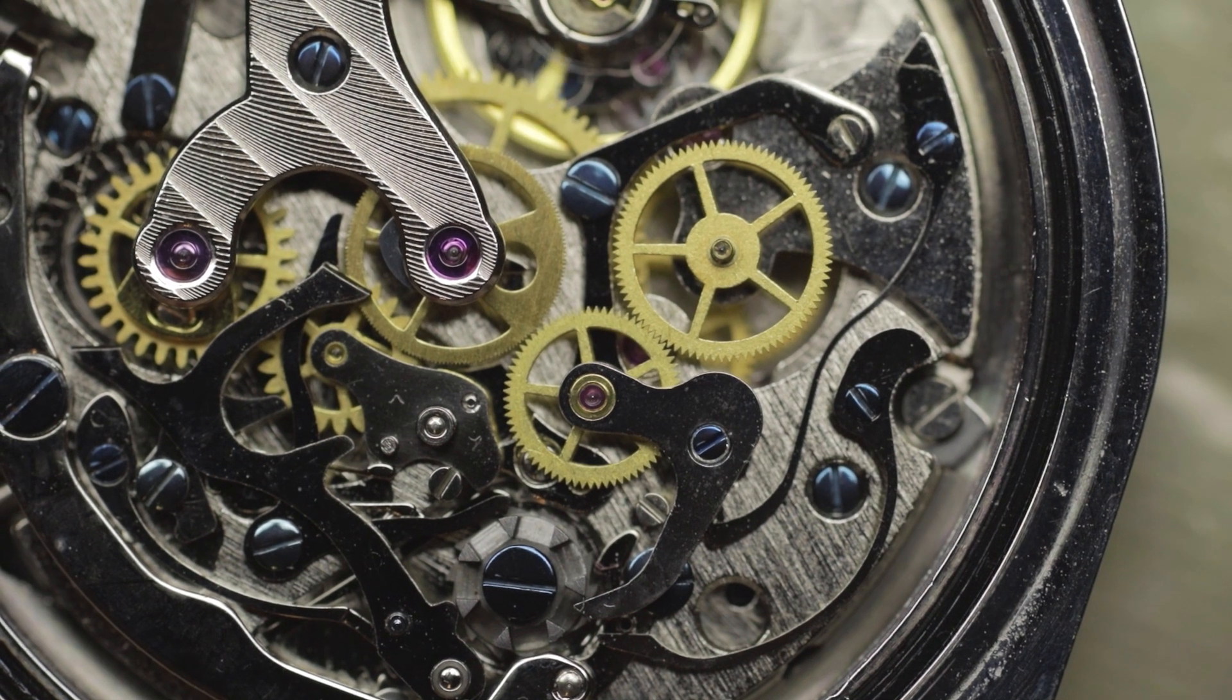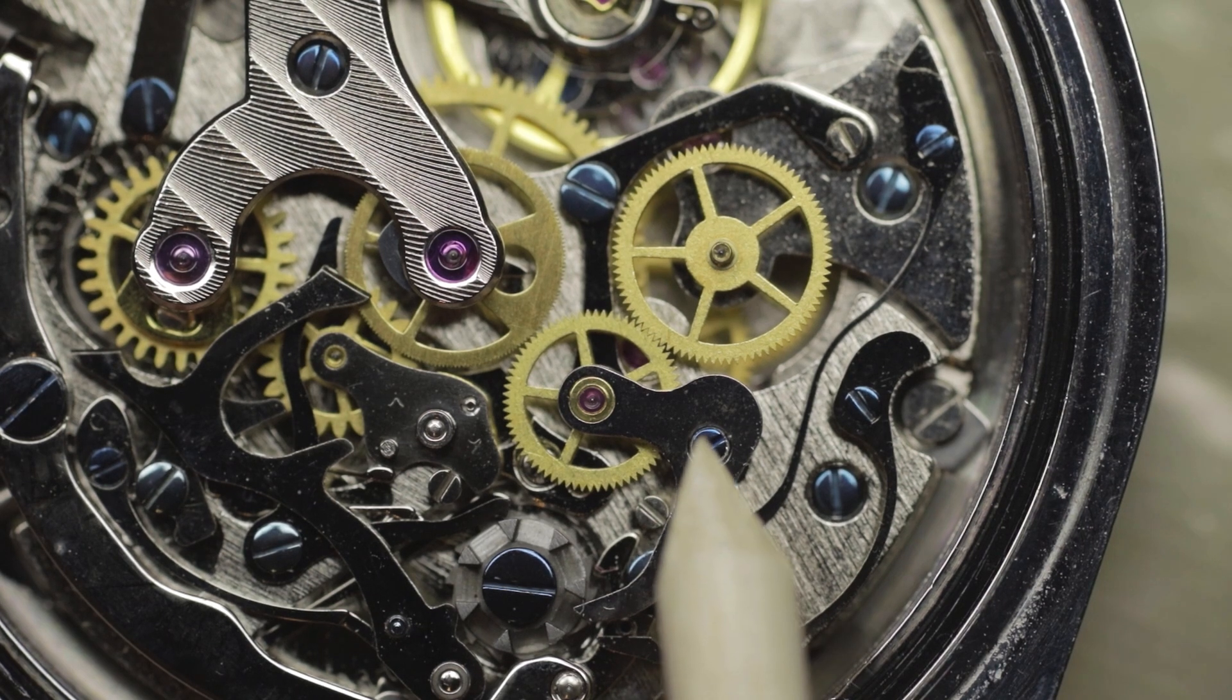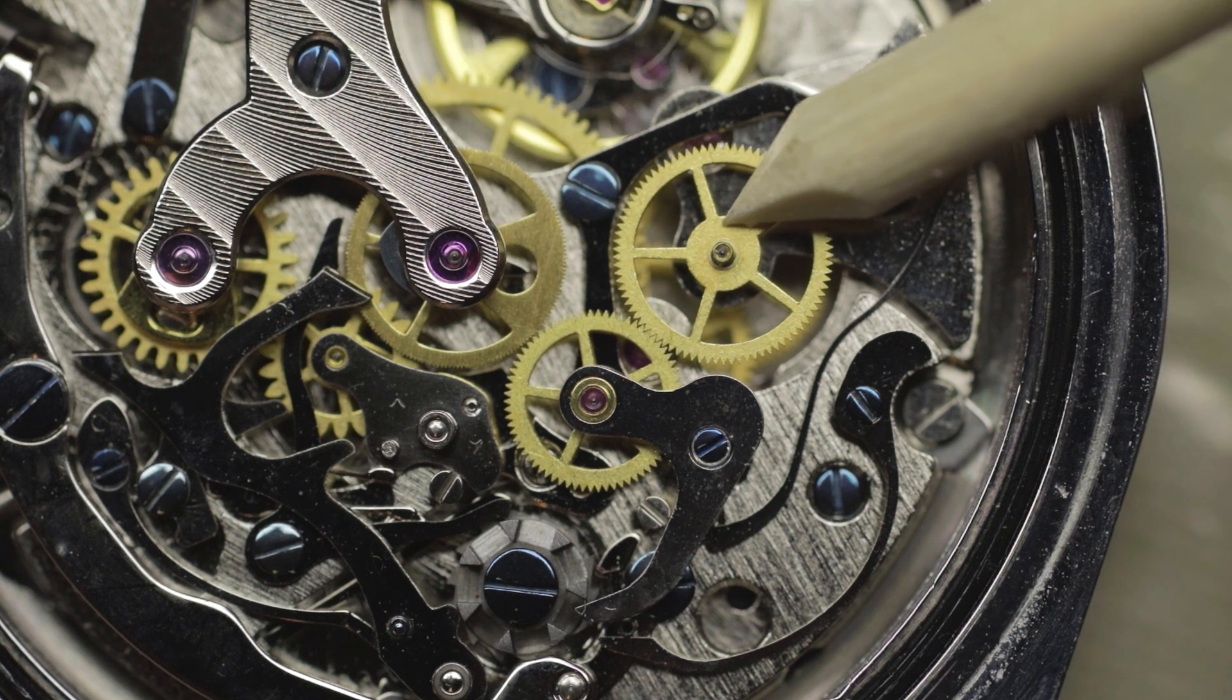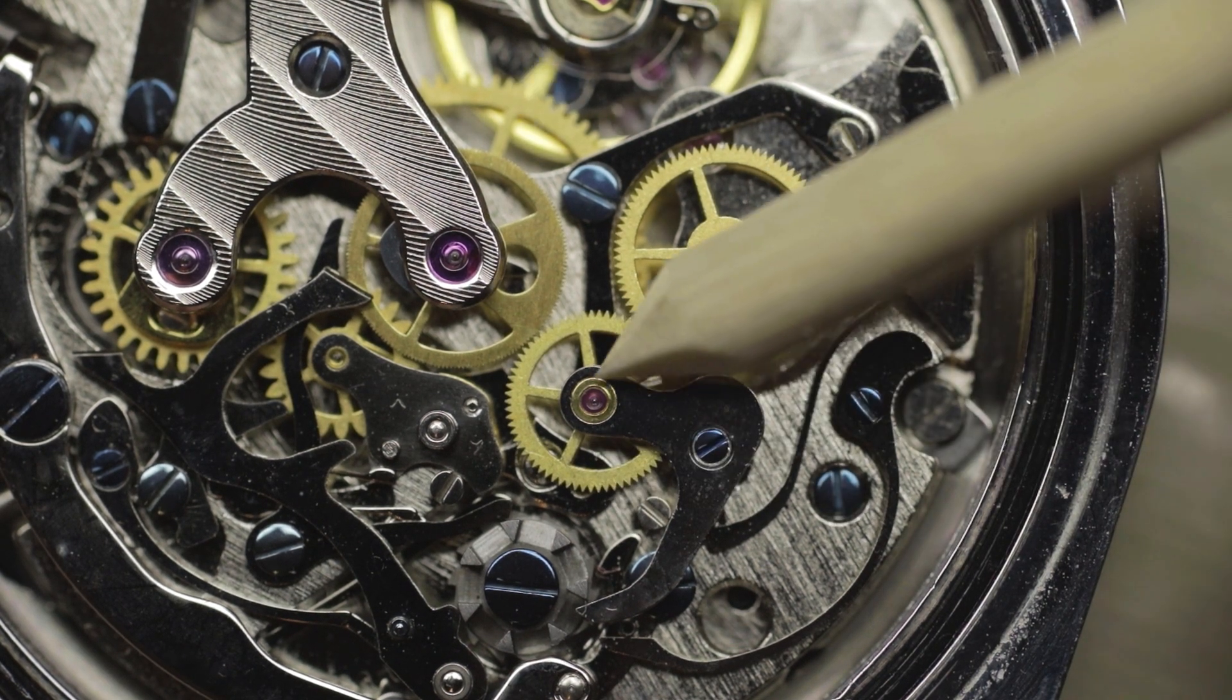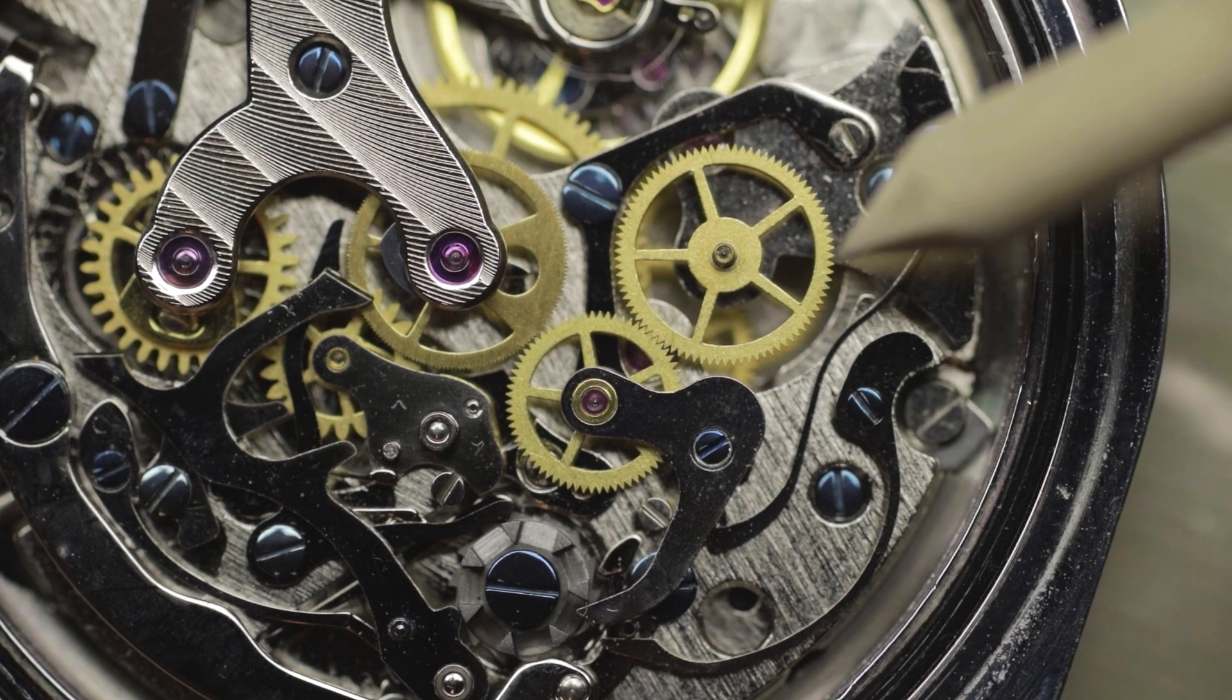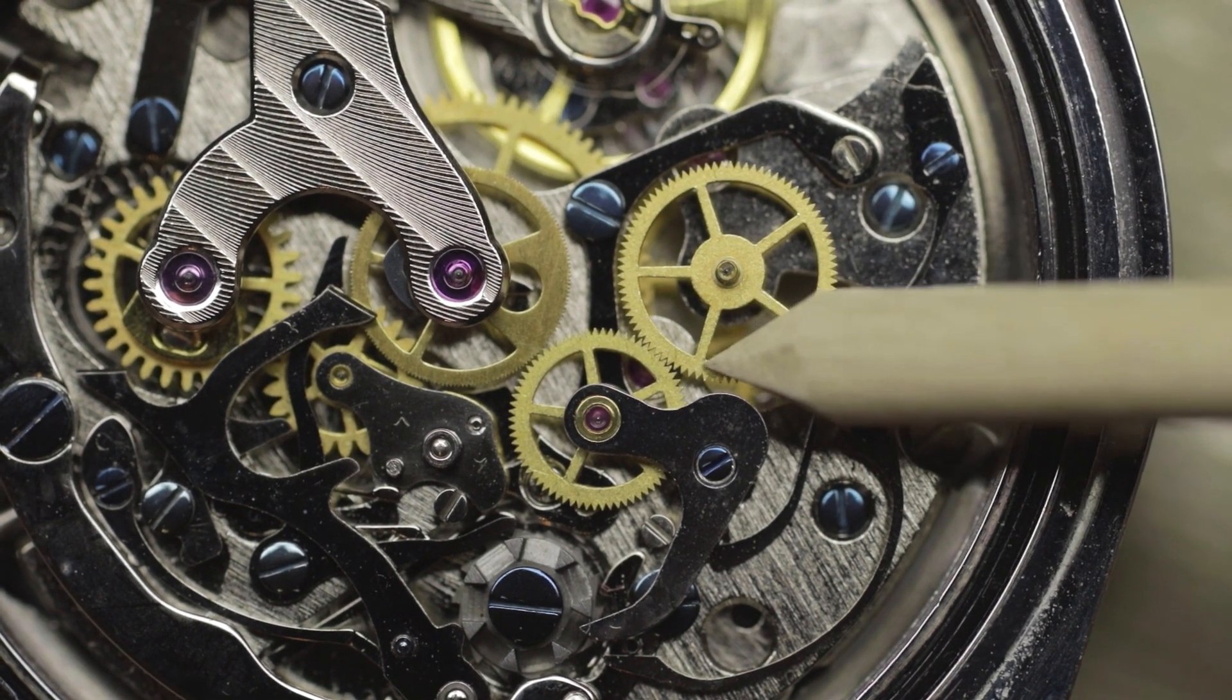Again importantly check all of the side play of all of the wheels and make sure that there's nothing untoward there before you start making adjustments. If you've got a bent pivot and this is out of alignment no amount of adjustment on these screws is going to fix it.